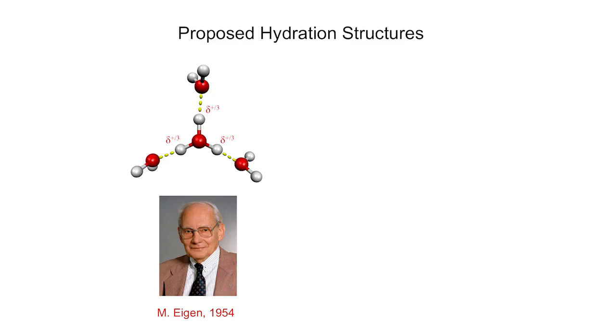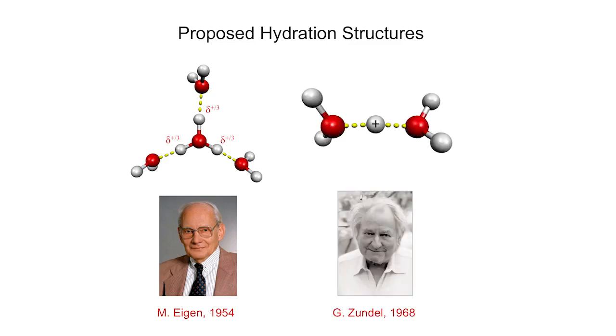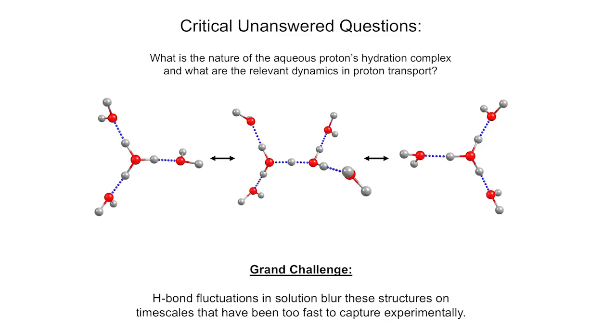Currently, it is believed that proton transport is guided by two main structural motifs. The eigen structure, shown here, which is a hydrated H3O+ hydronium ion, was first proposed by Manfred Eigen around 1954, and the so-called Zundel structure, proposed by George Zundel, where the proton resides equally between two sharing water molecules. There is much debate, still, over which arrangement dominates in solution, and how these structures evolve and interchange during the proton transport process.